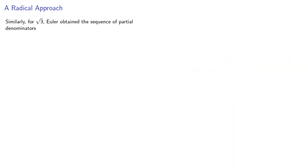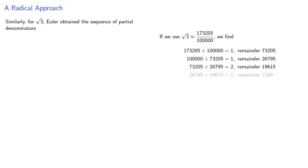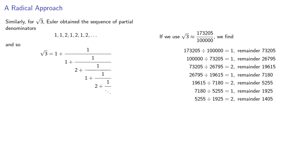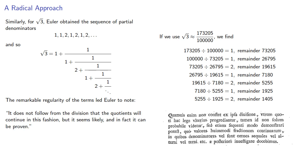Now we shouldn't generalize from one example, so Euler considered square root of 3. He didn't say what approximation he used, but if we use this approximation and apply the Euclidean algorithm, in this case our terms seem to alternate. The remarkable regularity of the terms led Euler to note: it does not follow from the division that the quotients will continue in this fashion, but it seems likely, and in fact it can be proven.